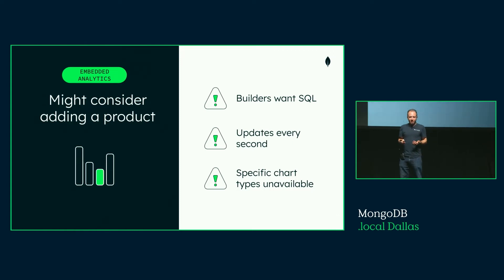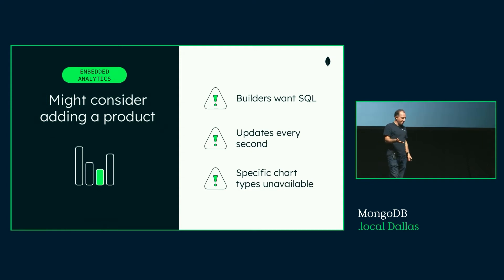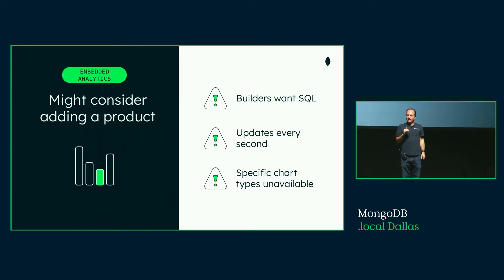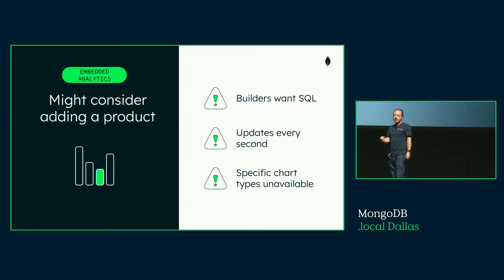Where you might consider another product: Atlas Charts is really meant for development teams familiar with the document model. If you need data analysts who just want SQL to build charts, then Charts might not be for you — the BI connector for business intelligence might be more appropriate. Also, Charts is not meant for real-time every-second updates like a trading screen; the lowest granularity is about every minute. And if you need a specific chart type like a candlestick, that's not currently in Charts.